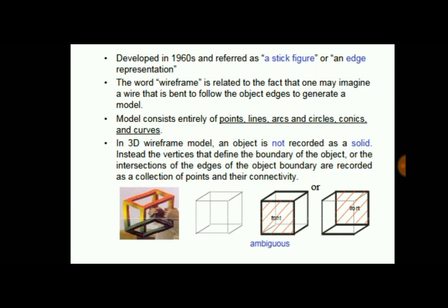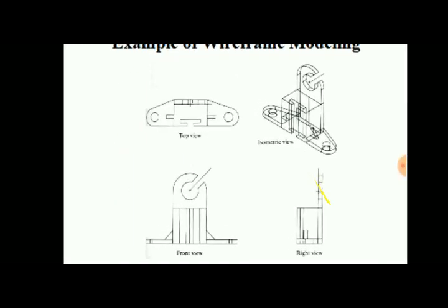It is also assumed to be a wire that is bent to follow the object edges to generate a model. The object is not recorded as a solid. Instead, the vertices that define the boundary of the object, or the intersections of the edges of the object boundary, are recorded as a collection of points and their connectivity.